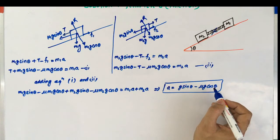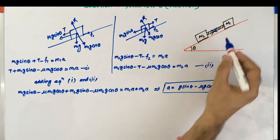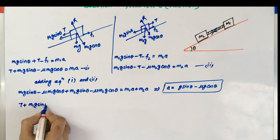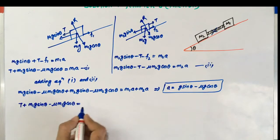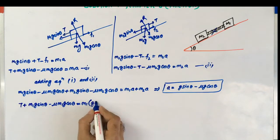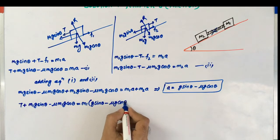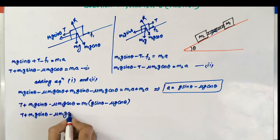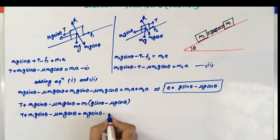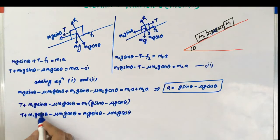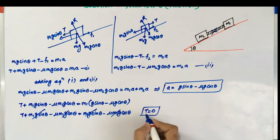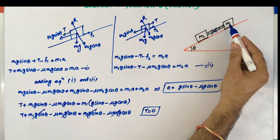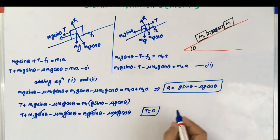So the acceleration becomes g·sin(theta) minus mu·g·cos(theta), which is the acceleration by which both blocks move in the downward direction. Now using equation 1 to find T: substituting the acceleration value, the M1G sin(theta) and mu·M1G cos(theta) terms cancel out, giving T equals zero. So the force by the rod on the block is zero, meaning the system acts as a single combined system.